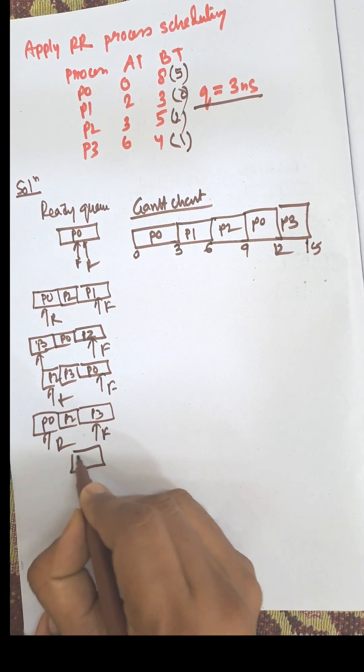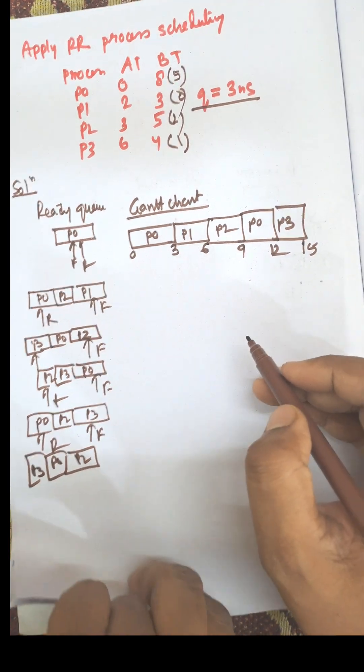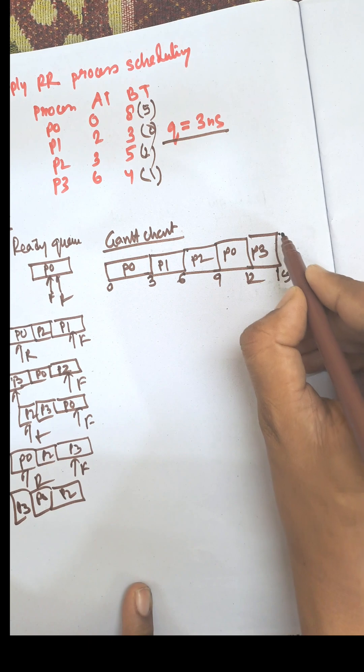Now P2, P0, and the last process is P3. Now P2 will be selected, remaining time is 2.